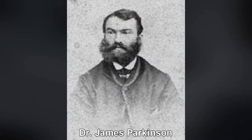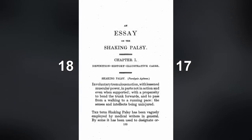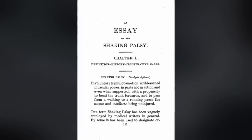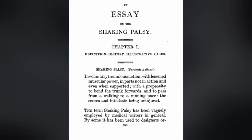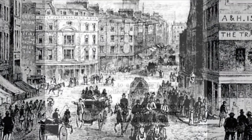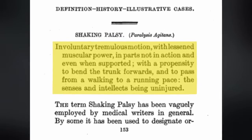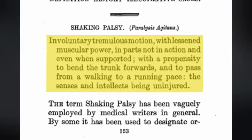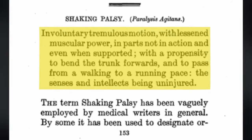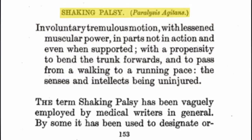Parkinson's disease is named after James Parkinson, a 19th century apothecary surgeon who first described the classic features of the disease in his 1817 paper, An Essay on the Shaking Palsy. In this paper, Parkinson describes six individuals — three of his own patients and three he observed outside his office window in London — with symptoms of involuntary tremulous motion, lessened muscular power, a propensity to bend the trunk forwards, and to pass from a walking to a running pace, the senses and intellect being uninjured. He called their affliction paralysis agitans, or shaking palsy.